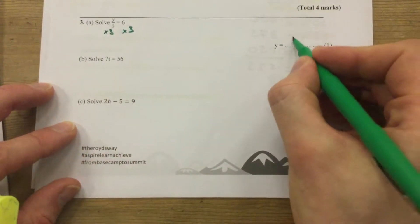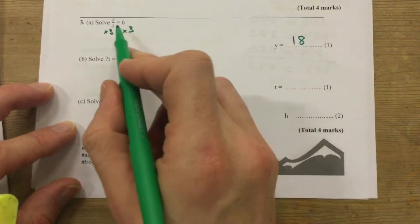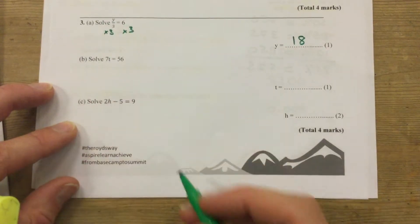The inverse is multiply by 3 on both sides. 6 times 3 is 18. Put it back in to double-check: 18 divided by 3 is 6. We're happy.